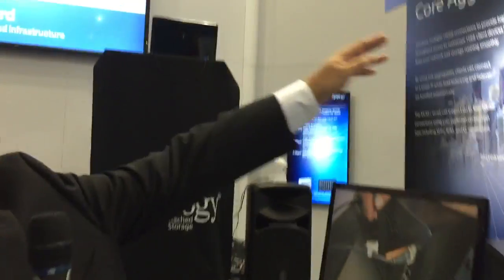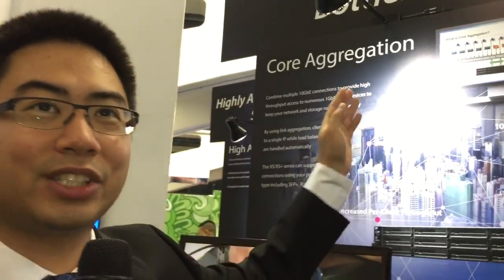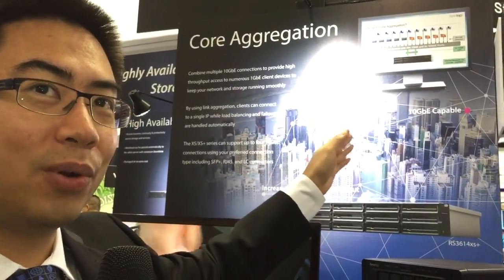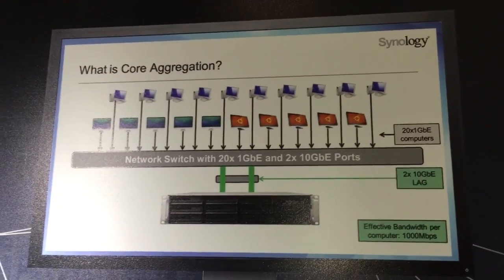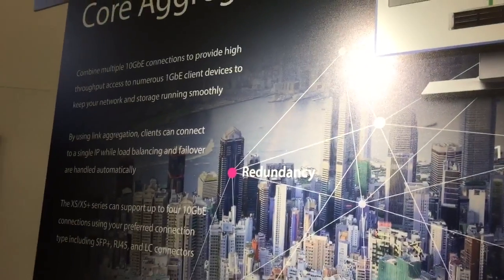Over here, we're giving an example of core aggregation. With core aggregation, you can have multiple computers — multiple 1-gig network computers — leverage 10-gig Ethernet, and they can all run at full saturation. Those individual computers can only manage 1-gig Ethernet, but they have 20 gigs of aggregate performance on the back end. Synology products that support 10-gig Ethernet are the XS and XS Plus series.